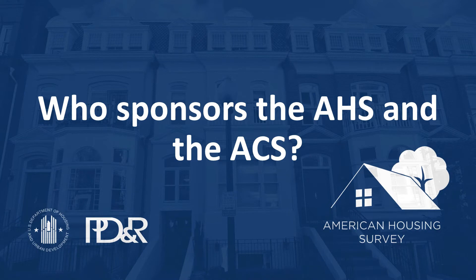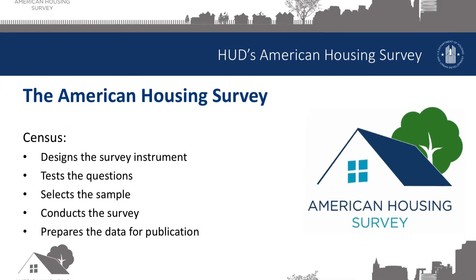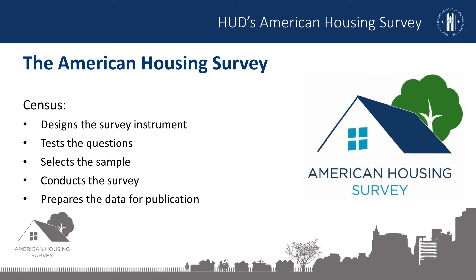Now, we'll look at who sponsors the AHS and the ACS. The U.S. Department of Housing and Urban Development, or HUD, sponsors the American Housing Survey and the U.S. Census Bureau, or Census, administers it. That means HUD pays for the AHS and applies the agency's deep understanding of the nation's housing market to determine the content, including what questions to ask, what metropolitan areas to survey, the sample size, and the geographic coverage. The Census Bureau carries out the survey research for the AHS. Census designs the survey instrument, tests the questions, selects the sample of individual housing units, sends out field representatives to conduct the survey, and prepares the data for publication.